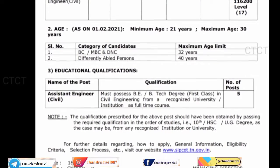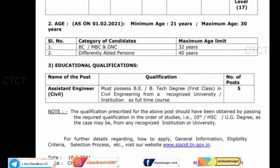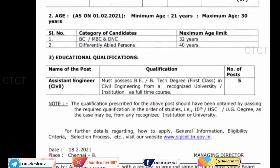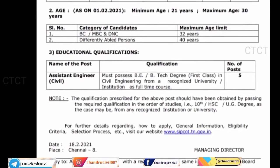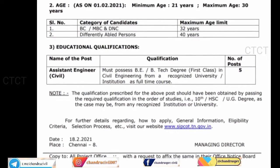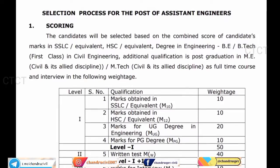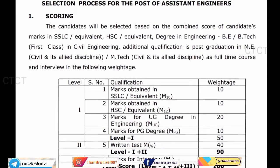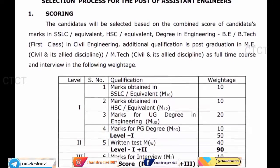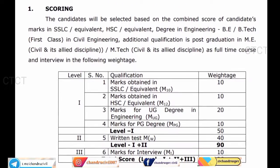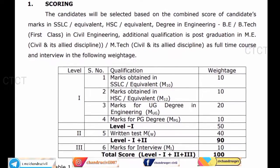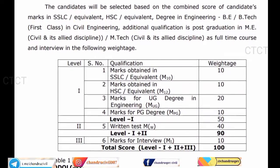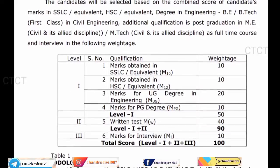The assistant engineer post has a total number of posts. The first page has 4 pages and the details are filled up. The next page is the weightage, the next page is the scoring, and the next page is the marks obtained. For 1st SSLC it is 10 marks.